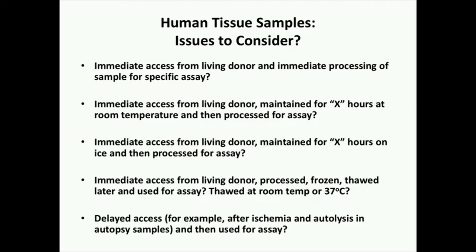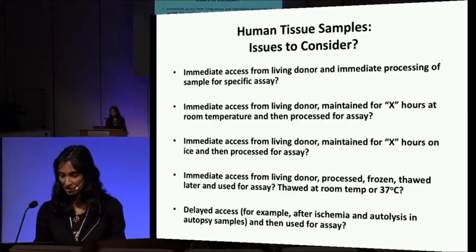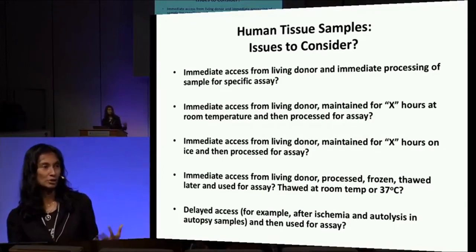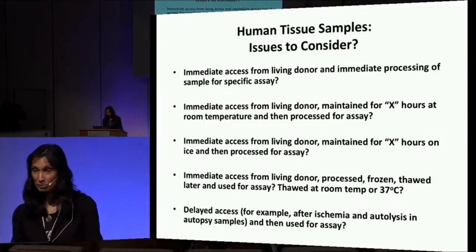There are issues to consider: how to actually access cells and samples from living donors, whether or not we would process them right away or whether they could sit for a while at room temperature or on ice, whether or not we could freeze them, thaw them, and look at everything in bulk, and whether the freeze-thaw process would have an effect on T cell subsets. We also considered autopsy samples — we did that for a year, and it didn't work out well for immune cell subsets. We don't do autopsies anymore, because of issues with ischemia, tolysis, and other factors that affect how the immune response can be evaluated.